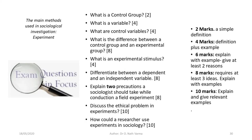Let us now look at some questions you might get on this topic. What is a control group? (2 marks.) What is a variable? (4 marks.) What are control variables? (4 marks.) What is the difference between a control group and an experimental group? (8 marks.) What is an experimental stimulus? (4–5 marks.) Differentiate between a dependent and an independent variable. (8 marks.) Explain two precautions a sociologist should take while conducting a field experiment. (8 marks.) Discuss the ethical problems in experiments. (10 marks.) How could a researcher use experiments in sociology? (10 marks.)